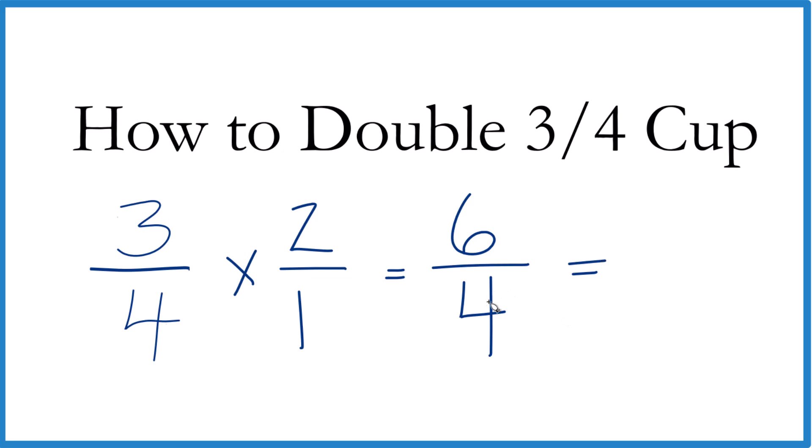Finally, you could look at this and say four goes into six. One times four is four. And we'd have two left over. And we'd keep the four the same. One and two-fourths. Two-fourths, that's the same as one-half. So we'd get our one and one-half again.